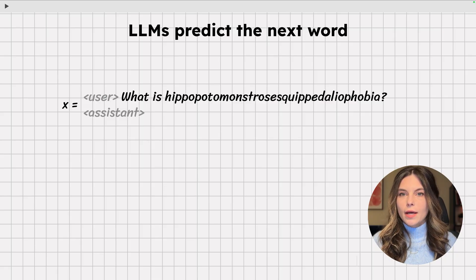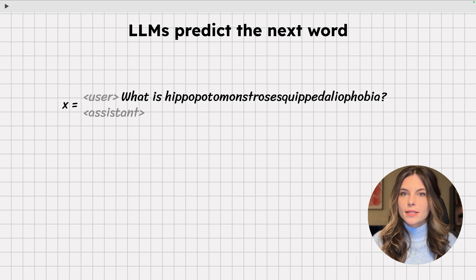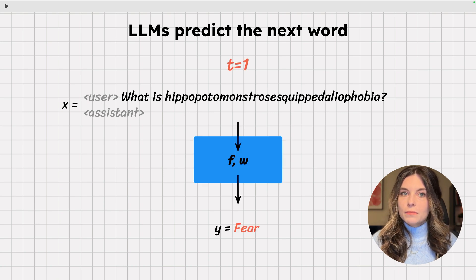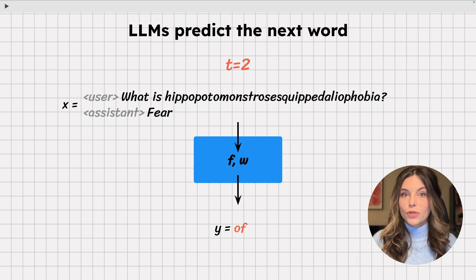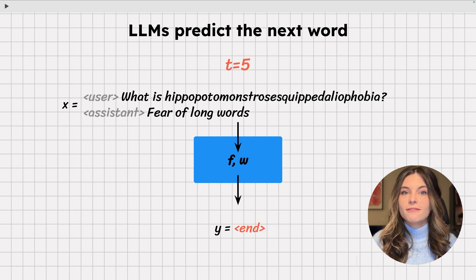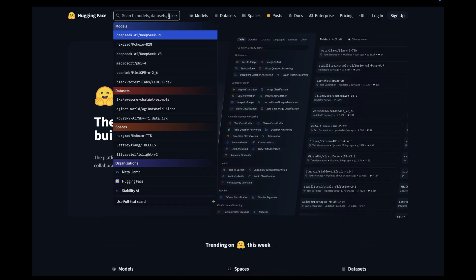We take our input and add two markers for the speakers. Appending 'assistant' at the end conveys to the model that we're expecting it to respond as an interlocutor, as opposed to, say, write an essay in the voice of the user. At time t1, we feed this into the model and get our first prediction, which is 'fear'. Next, we move the predicted word into the input and feed it back into the model. At time t2, we get the next prediction, which is 'of'. We repeat the process — the model predicts 'long', 'words', and finally the end token, which means we're done.